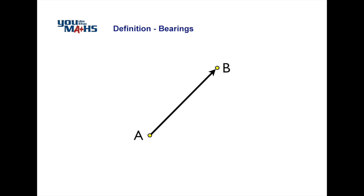If we wanted to find a direction from one point to another, say for example from point A to point B as in this diagram, we can use bearings. The two types of bearings we're going to examine are conventional bearings and true bearings.